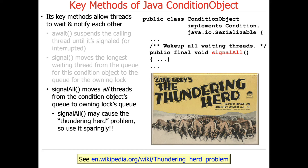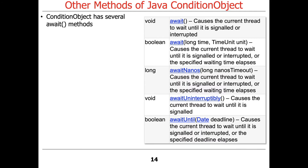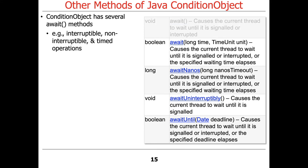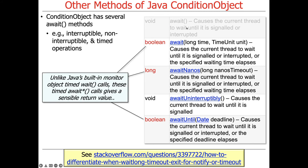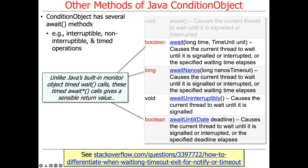There are cases where signalAll is useful, especially if you want to shut down all threads — signal them all to wake up and then shut down. That's a perfectly good use, but more generally it's not a good idea. There are also other methods in Java ConditionObject — several variants of await. awaitUninterruptibly will not be able to be interrupted, so it will await forever. Probably not the best idea to use it, but if you need it, it's there.